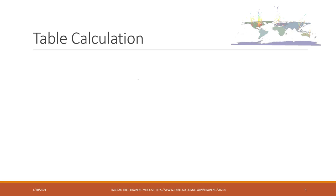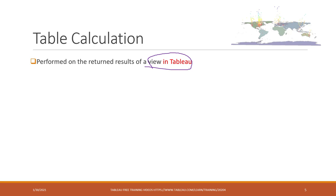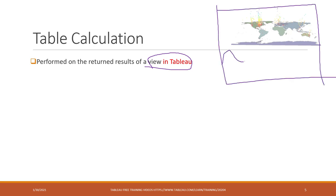In addition to the regular calculations, Tableau also has table calculations. A table calculation is based on the retained result in a view in Tableau — calculated within the view itself. So when you have a line chart or bar chart, you have markers, dimensions, and measures on the sheet, and you're using the data on the current sheet to do some simple calculations.